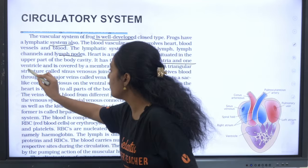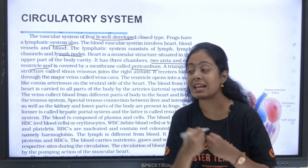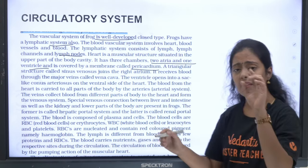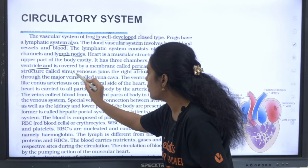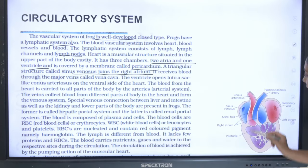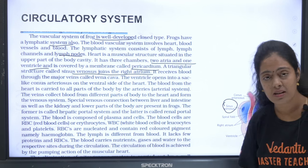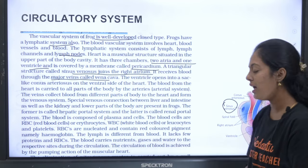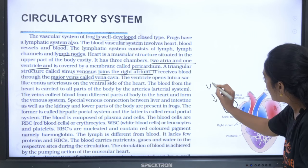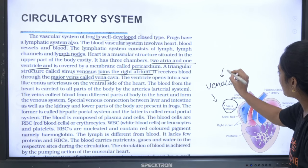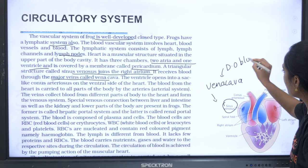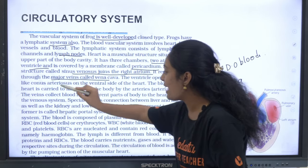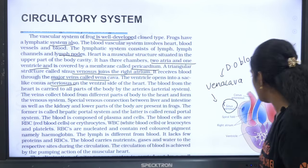A triangular structure called sinus venosus joins the right atrium and receives blood through major veins called vena cava. The vena cava receives deoxygenated blood. The ventricle opens into a cone-like structure called conus arteriosus on the ventral side of the heart.